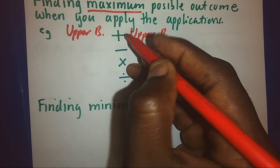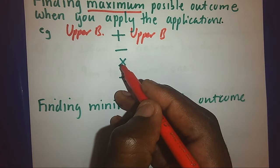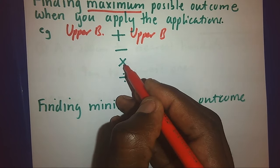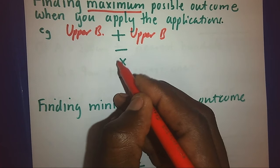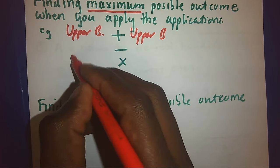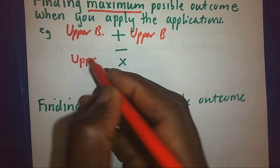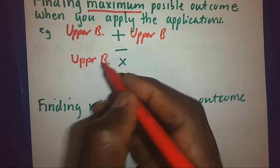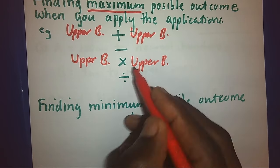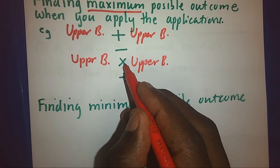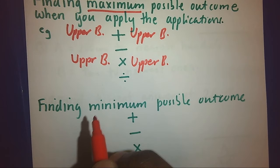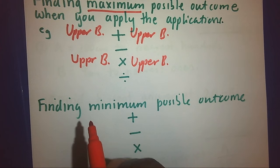In the same case of multiplication, in order to get the biggest possible answer and our activity involves multiplication, we shall also use the upper bounds — the upper bound for the first number and the upper bound for the second number. And if there are more than two numbers, we multiply upper bound times upper bound times upper bound for all the numbers given.